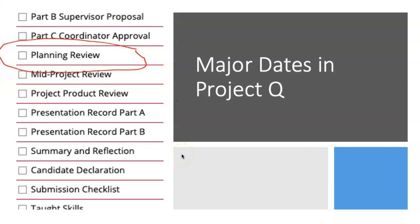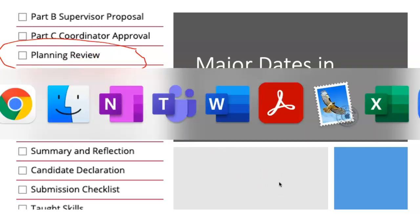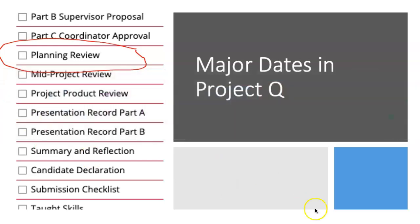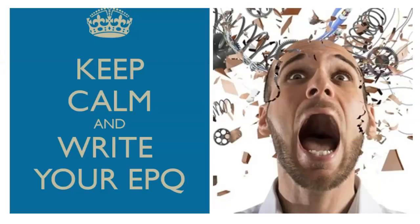This is very important because in the production log the planning review follows the coordinator approval. It means that you've now decided what your working title is going to be and you will now proceed with your plan, showing that you're breaking the plan down into more manageable chunks. Many of you are going to feel overwhelmed straight away. Coursework has been reduced at GCSE, so increasingly students are not used to project-based work and they're not used to working on their own.